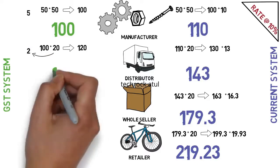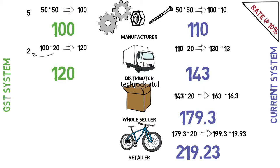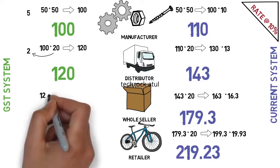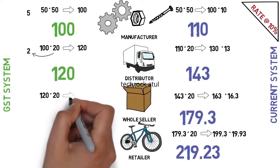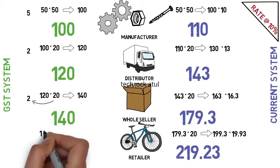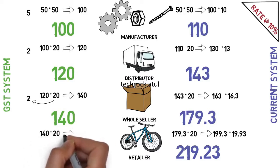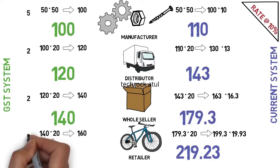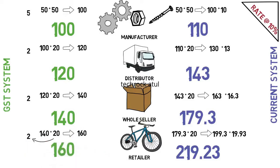The wholesaler buys the product for 120 rupees, adds 20 rupees profit making it 140 rupees, and pays tax of 2 rupees on his profit of 20 rupees. The retailer buys for 140 rupees, adds 20 rupees profit, pays 2 rupees tax, and raises the final consumer price to 160 rupees. So comparing prices, the product is 59.23 rupees cheaper under the GST system than the current system.